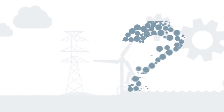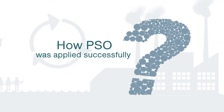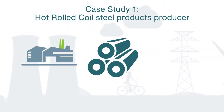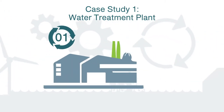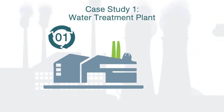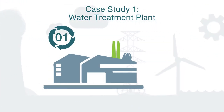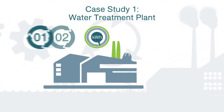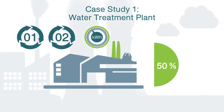We will look at how PSO was applied successfully in a couple of case studies. A hot-rolled steel products producer mainly focuses on the export market. Pump system 01 at the water treatment plant was selected for the UNIDO Expert Pump Systems training, and together with pump system 02 accounted for 50% of the electricity consumption at the plant.